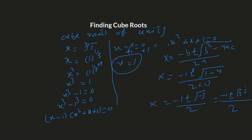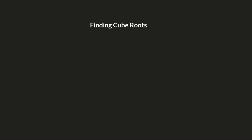Now we need to find the cube roots of eight. Pause the video and try to figure it out following the same steps. We set up X equals the cube root of eight, written in exponential form as eight to the power of one-third. Taking the cube on both sides gives X cubed equals eight, so X cubed minus eight equals zero.